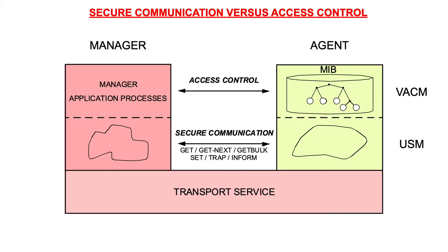There are two aspects of security: secure access to the data within the MIB, and secure transport of the data over the wire. The first aspect — secure access to MIB data — is the subject of access control, as defined by the view-based access module. At this level we find access control lists. The second aspect — secure communication — is defined by the user security model and takes care of encryption and authentication.